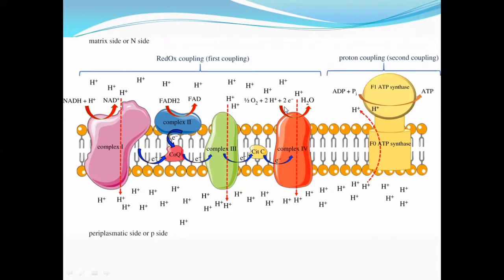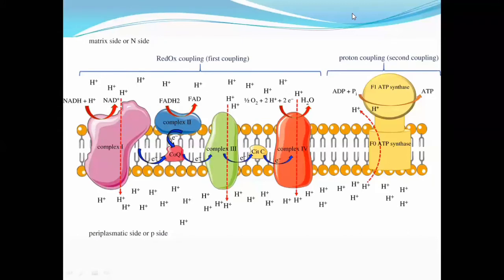So the electron phosphorylation chain has 4 complexes — complex 1, 2, 3, and 4. The oxidation process has a final product, the water molecule. The phosphorylation process involves ATPase. This whole process of oxidation together with phosphorylation is known as oxidative phosphorylation.